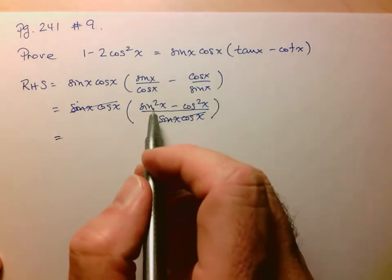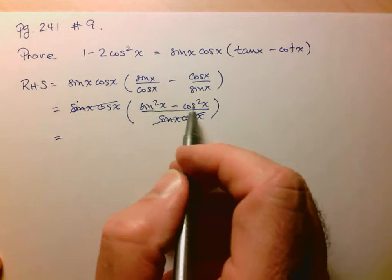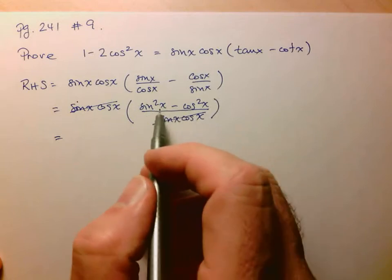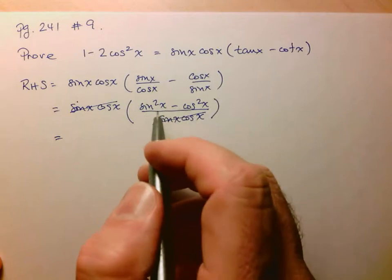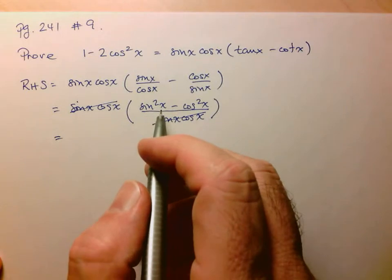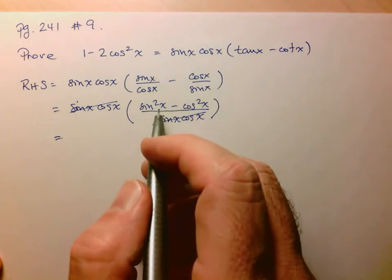So here, I'm left with sine squared x minus cos squared x. This again, looks very familiar, looks a lot like the cosine double angle identity or one of them.